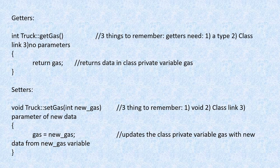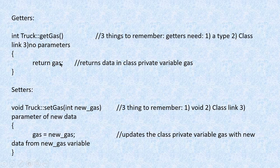Here is an overview of getters and setters. The three things to remember about these functions are: the type, the class link, and whether they have parameters or not. In getters you will have some type such as int, then the class::functionName with empty parentheses and no parameters. This type of function only returns something — here we're accessing the private variable gas and returning whatever is stored in that variable for an object. A setter function is always a void function. You'll have class::functionName and then a new variable version of your private variable that will update the information stored in a class object.